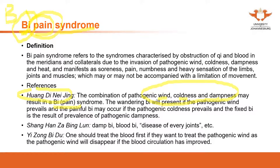Bi pain syndrome refers to obstruction of qi and blood, and the patient will present as pain. The blockage — the obstruction of qi and blood — is in the meridians and collaterals. What are the causes? Pathogenic wind, coldness, dampness, and heat. What are the symptoms or presentations? Soreness and pain, numbness, heavy sensation — it can be in joints or muscles. The patient may or may not present with limitation of movements. So this is the definition of Bi pain syndrome.